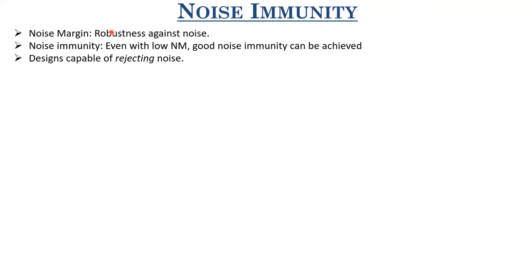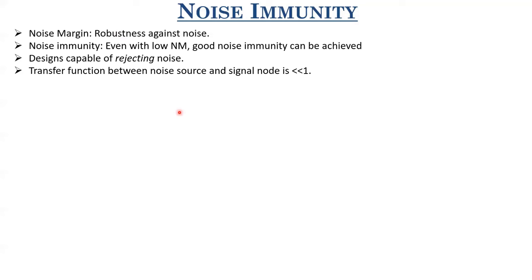Noise margin refers to the maximum noise that can be tolerated at the intermediate node when cascading two gates without affecting performance. Noise immunity, on the other hand, is the efficiency of the circuit with respect to rejection of noise sources — how well it decouples or mitigates the impact of noise sources on a signal node important for circuit operation. The transfer function between the noise source and the signal node under consideration should be much less than one, so that only a very small amount of noise is coupled to the signal node.